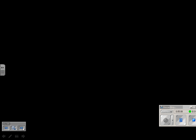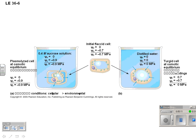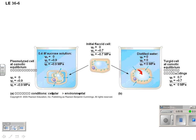Here's an example: a cell placed in a 0.4 molar sucrose solution. This cell has higher water potential inside because there's more solute outside the cell than inside — water will leave. If we put it in distilled water, the water potential outside the cell is high and inside is low, so water will go in.